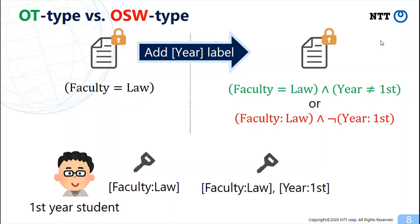Also, new keys will be distributed. The important fact is that he can decrypt the new ciphertext with the old key since this key doesn't have attribute year first in the OSW type ABE.